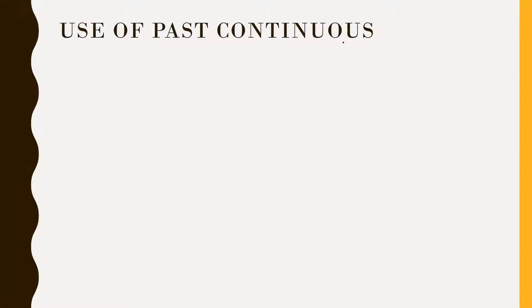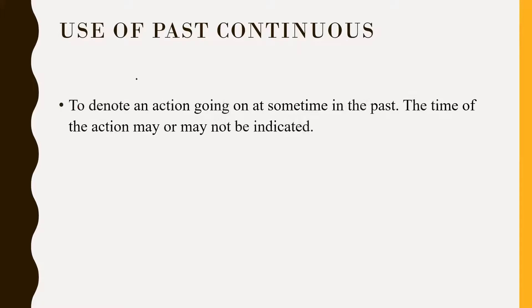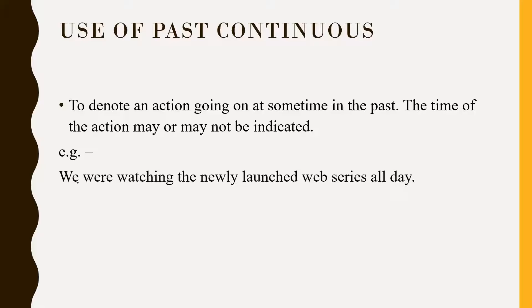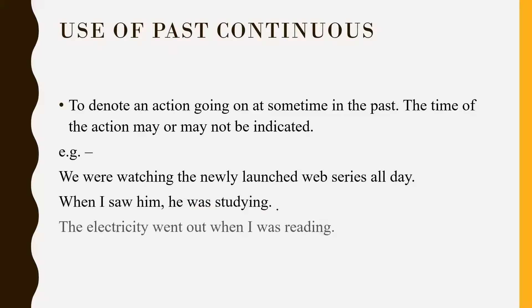Use of past continuous. First, to denote an action going on at some time in the past; the time of action may or may not be indicated. Example: 'We were watching the newly launched web series all day.' 'When I saw him, he was studying.' 'The electricity went out when I was reading.' Note: recent actions go in simple past.